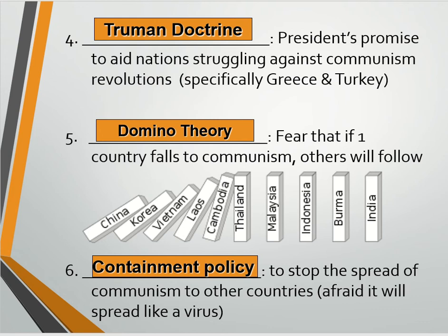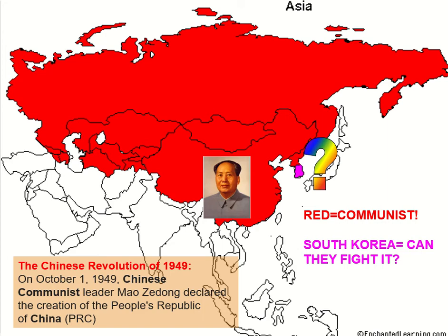Where do we have communist countries at this point? The Soviet Union is all of this up here — these countries exist now, but at the time they were all the Soviet Union. It's also going to spread down to China and obviously Mongolia and North Korea. If you were looking at just this map and you're the United States, you're kind of panicking because all of this is red. So it's kind of like it's spreading. Mao Zedong is the leader of China who creates the People's Republic of China, which is modern China. The question is going to be what happens to South Korea, and so this is where we're going to talk about the Korean War.